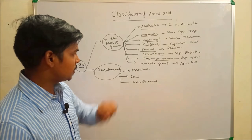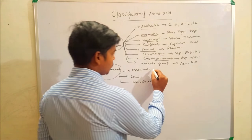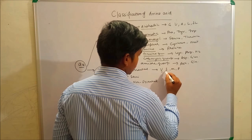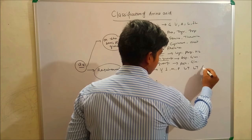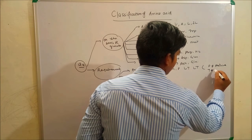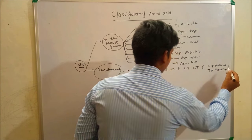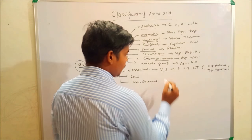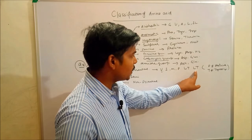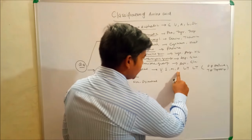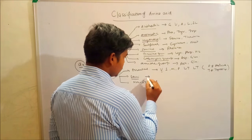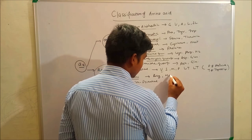I will give you an important mnemonic for essential amino acids: LTLTVIMPL TT — V for valine, I for isoleucine, M for methionine, P for phenylalanine, L for leucine, T for tryptophan, L for lysine, T for threonine. Note that proline and tyrosine are NOT included. The semi-essential amino acids are only two: arginine and histidine.